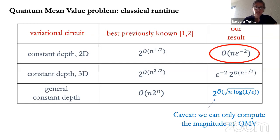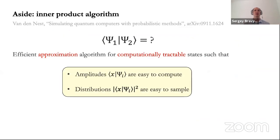Let me sketch very briefly how the algorithm works in the simplest case, which is constant depth on a 2D lattice. The idea is to express a quantum mean value as an inner product between two quantum states psi-one and psi-two that are computationally tractable in a certain sense — meaning we can easily compute amplitudes of psi-one and psi-two in the standard basis and efficiently sample from the probability distributions they define.